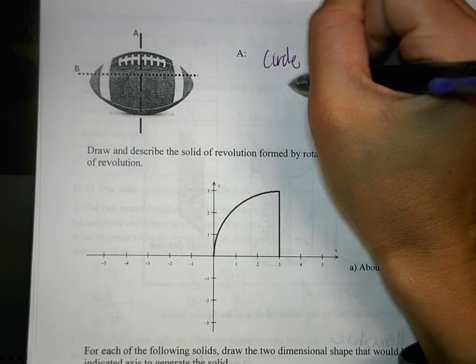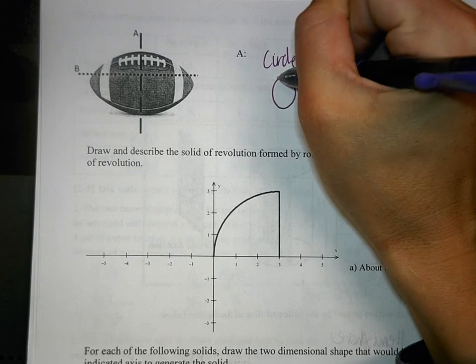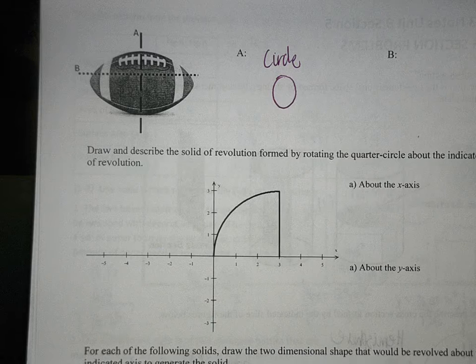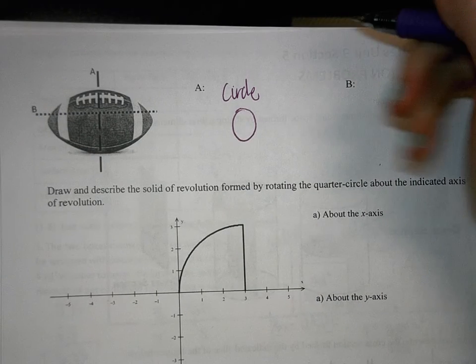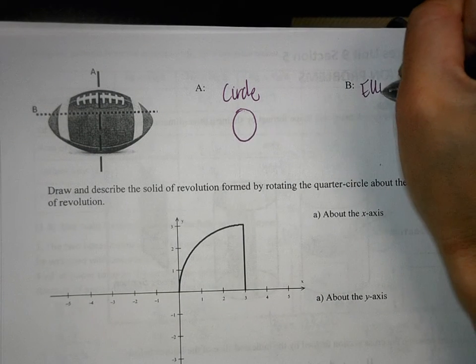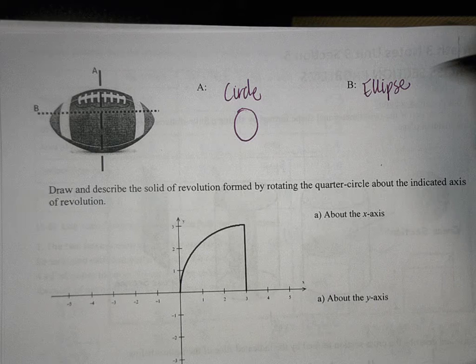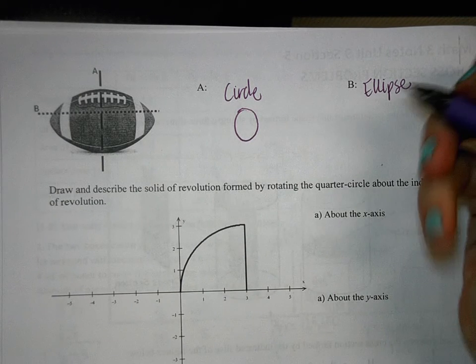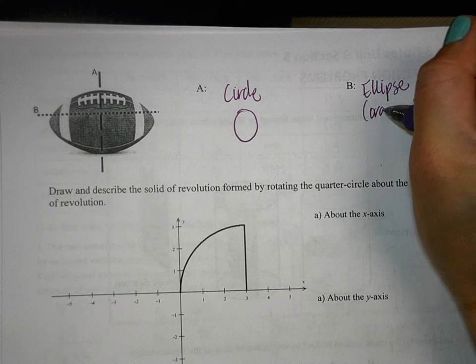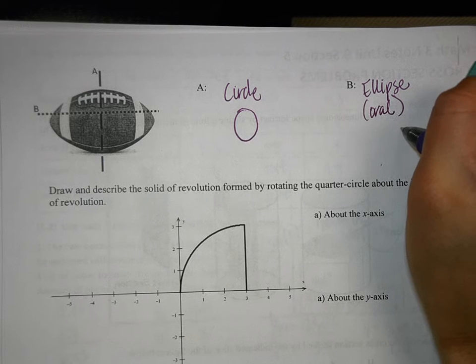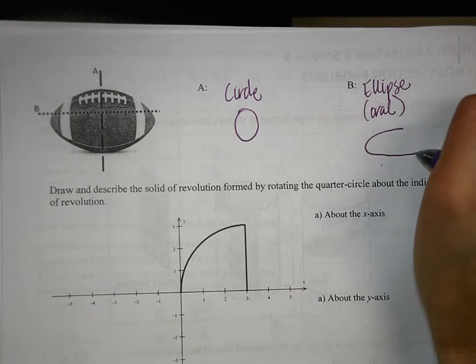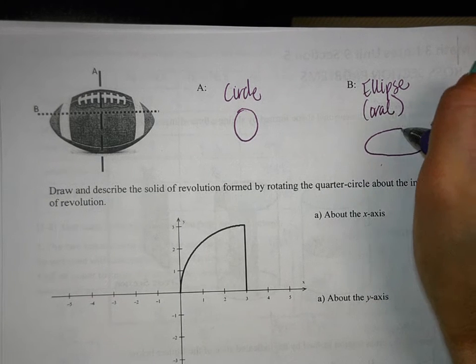Yeah, the A figure, it's actually gonna be a circle. I guess it depends on the football; it could be an ellipse. We're gonna call it a circle for right now. But on B, that would make an ellipse. How many of you have not heard the word ellipse before?